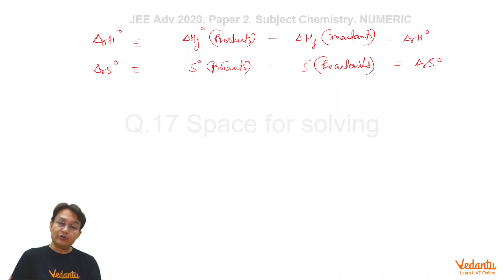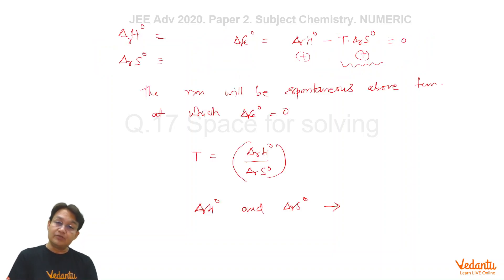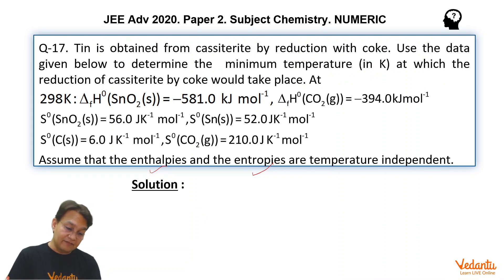By substituting these values, you are going to get the temperature at which this reaction is going to be at equilibrium. Above that temperature, the reaction is going to be spontaneous. Let's see what are the values given. Delta HF0 of SnO2 is given, delta HF0 of CO2 is given. The given reaction will be: SnO2 reacting with carbon forms tin plus CO2. This is the balanced equation for which you have to find delta RH0 and delta RS0.